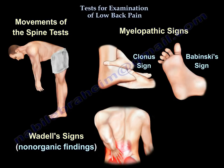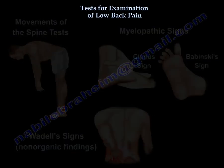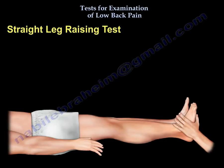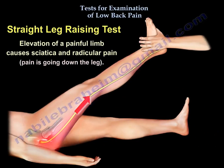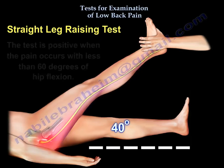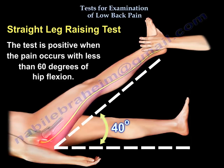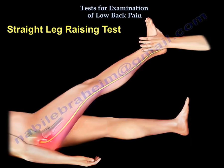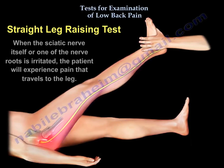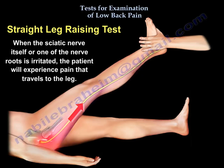The straight leg raising test: elevation of a painful limb causes sciatica and radicular pain, meaning the pain radiates down the leg. The test is positive when pain occurs with less than 60 degrees of hip flexion. When you perform this test, you stretch the sciatic nerve, and when the sciatic nerve or one of its roots is irritated, the patient will experience pain going into the leg.